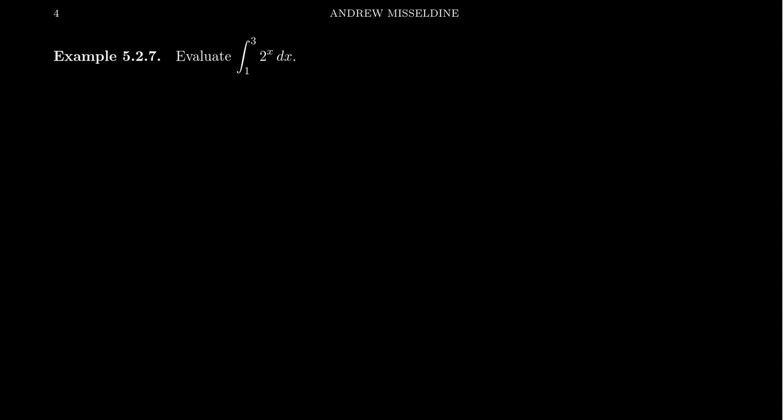Welcome back, everyone. We are still in section 4.5 in Stewart's textbook, talking about the definite integral. I want to do another example of an integral, but this time, what would happen if we had an exponential function? So if we think about this graphically, we have the function y equals 2 to the x — exponential growth — and we're trying to go from 1 to 3, calculating the area of that region.